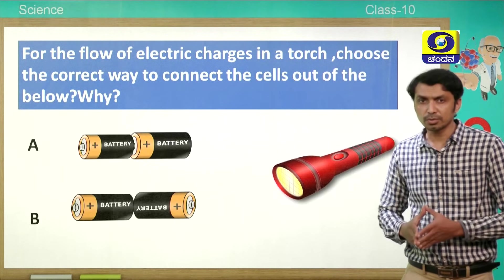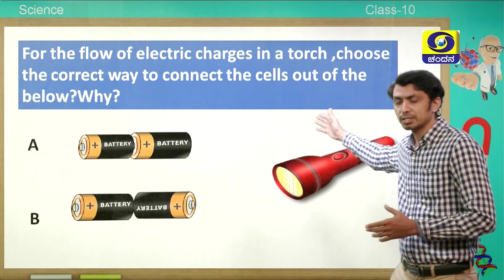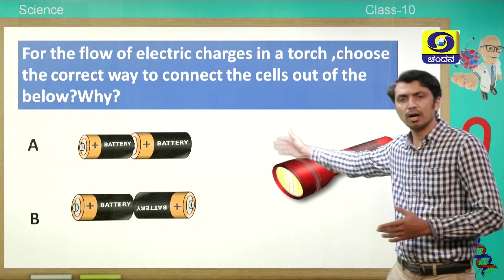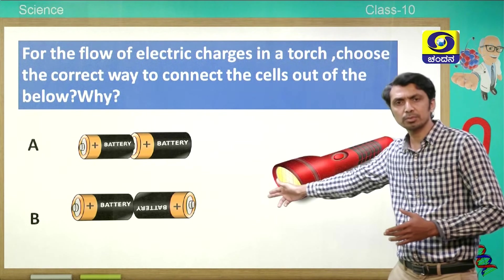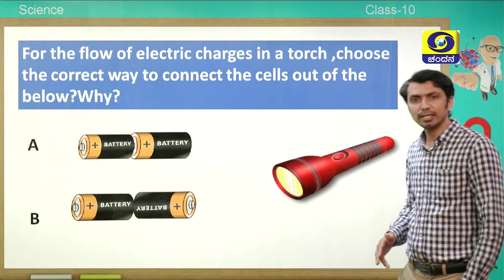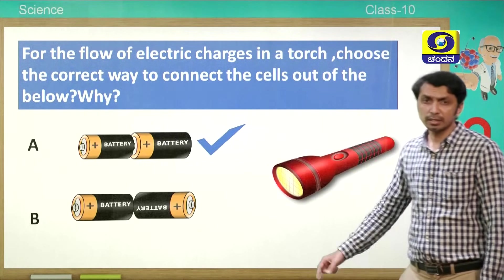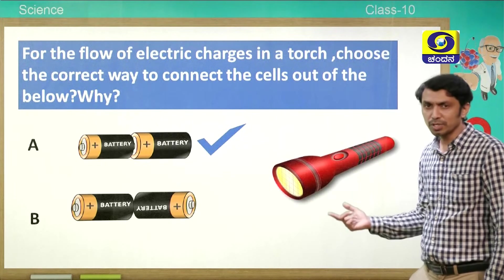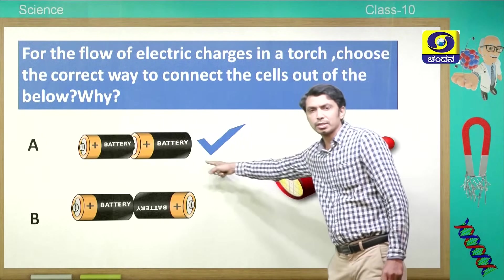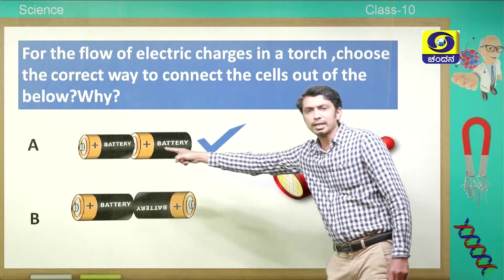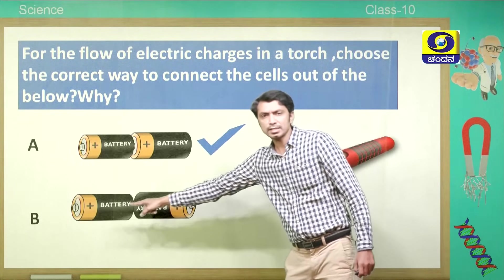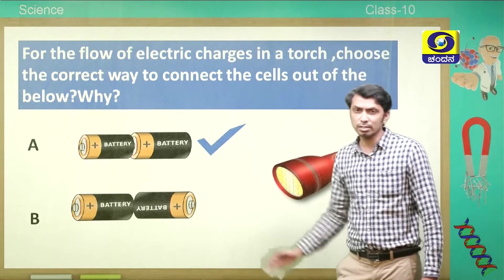For the flow of electric charges in a circuit or in a torch, how should we connect the two cells? We should connect them so that the positive terminal of one cell faces the negative terminal of the other. Unlike charges attract each other, so the positive and negative charges attract. If both ends are negative charges, they will repel and the charges will not flow.